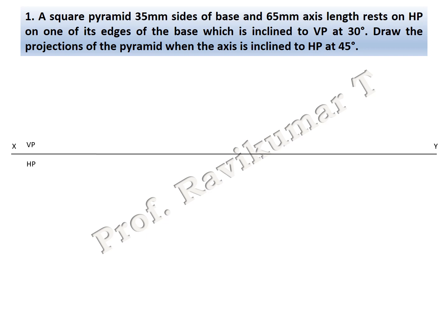The first problem: 35 mm sides of base, 65 mm axis length, resting on HP on one of its edges — so it's an edge condition. The edge of the base is inclined to VP at 30 degrees. Draw the projection of the pyramid when the axis is inclined to HP at 45 degrees. This is a second position problem, and it is a without-locus problem.